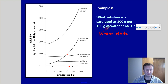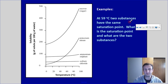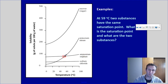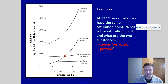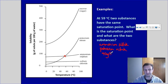I keep saying mils — the normal unit is per 100 mils of water. At 59 degrees Celsius, two substances have the same saturation point. Those are ammonium sulfate and potassium nitrate, meeting at around 90 grams per 100 mils. Since we don't have an amazing scale here, we're estimating — but around 90 grams per 100 mils is what we've got.